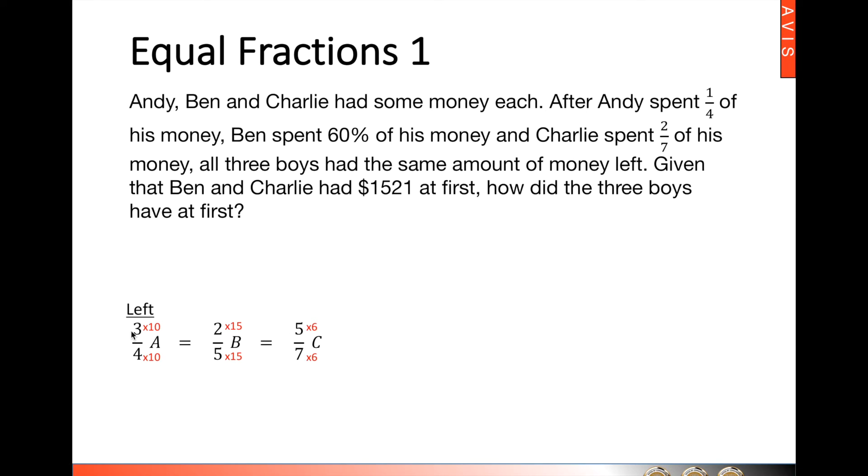Naturally, since we multiply the numerator by such numbers, we will do the same to the denominator. When we do that, we will end up with thirty over forty A equals thirty over seventy-five B equals thirty over forty-two C. This means that they are exactly the same, as the question suggested. Same amount of money left. So instead of cutting units into thirty parts, we have the numerators being the same. So the idea here is to make the numerator the same.